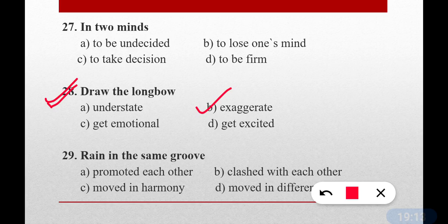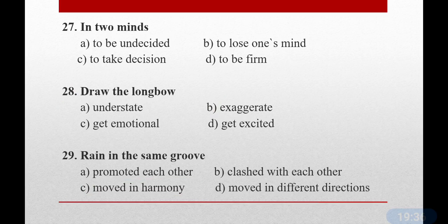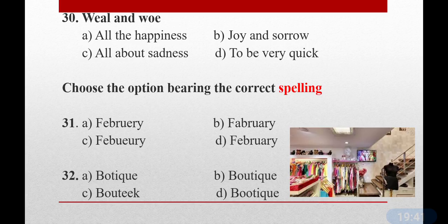Question number twenty-nine: Rain in the same groove. The meaning is to move in harmony — 'sat sat chalna'. Question number thirty: Wheel and woe. You all know — wheel and woe means joy and sorrow.